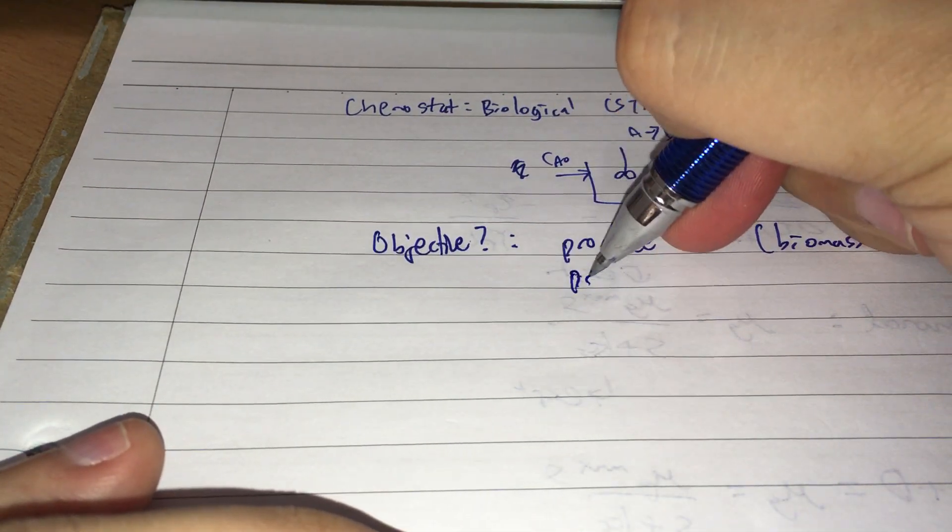What is the objective of the chemostat? You always want to begin with the end in line. The objective is to either produce cells or biomass, or else it's to produce product.